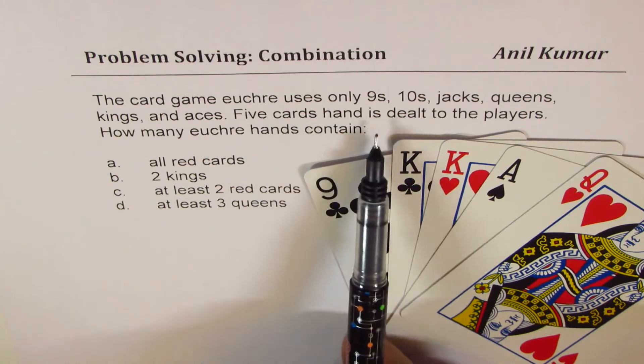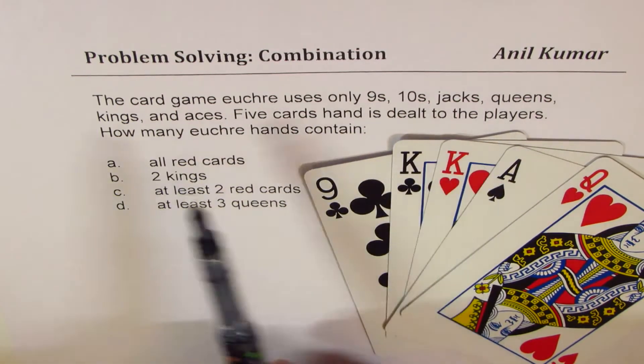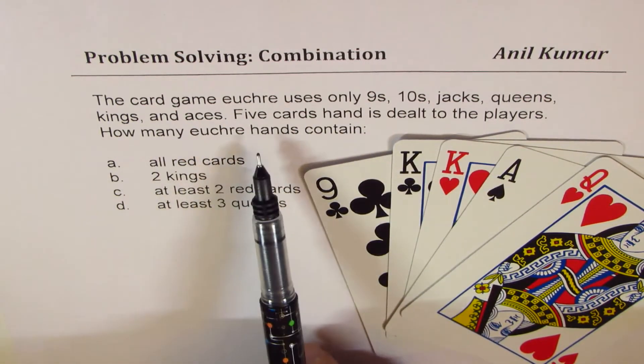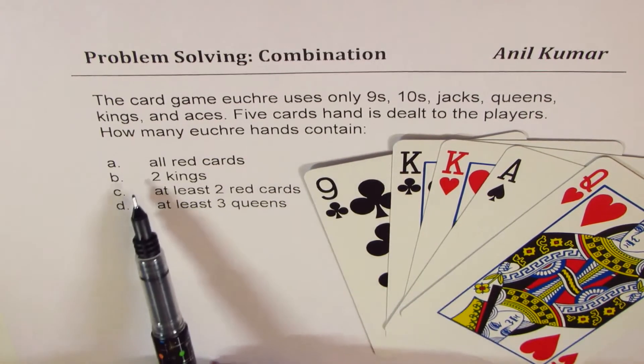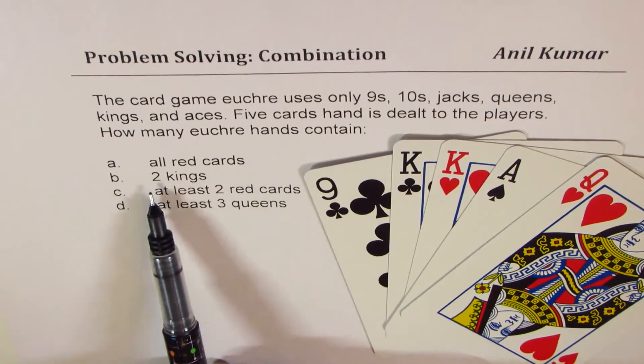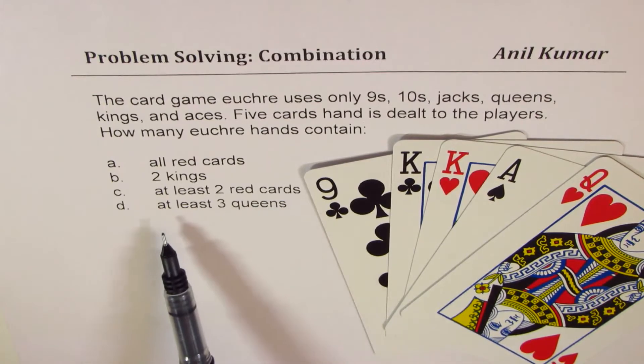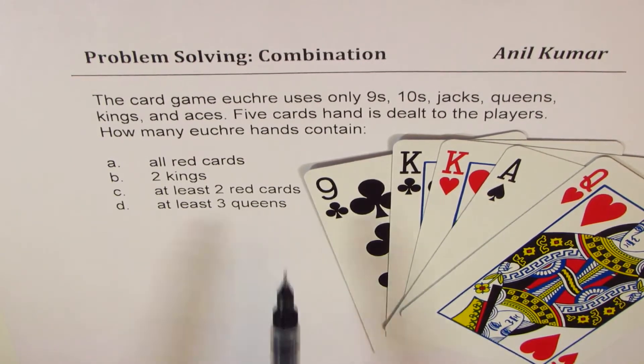Five cards hand is dealt to the players. How many Euchre hands contain all red cards, two kings, at least two red cards, at least three queens?